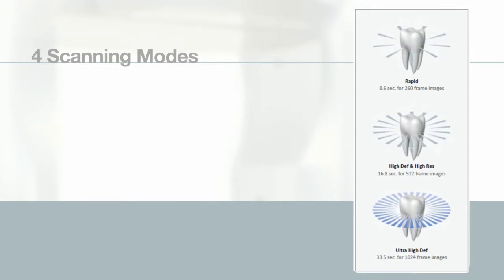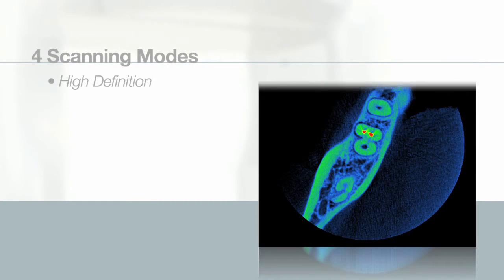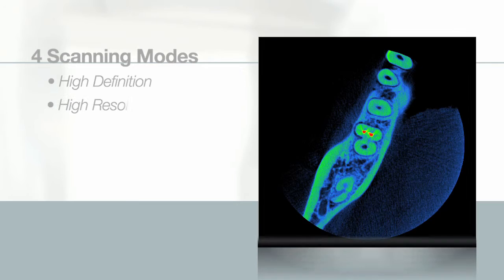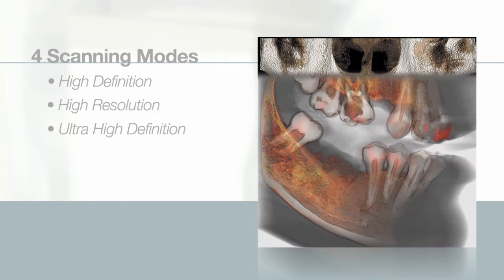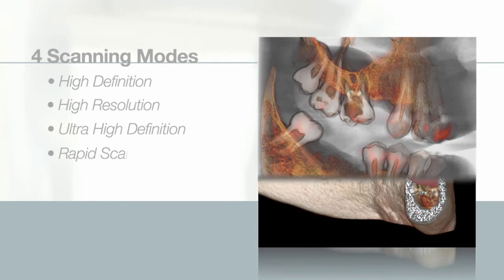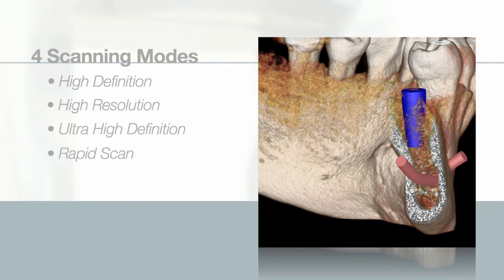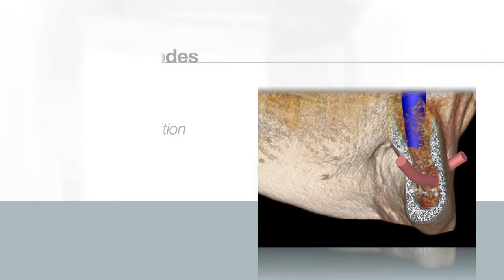Four scanning modes are available with the Prexion 3D Elite: High Definition, High Resolution, Ultra High Definition, and Rapid Scan, which emits less effective radiation dose than a film FMX study.